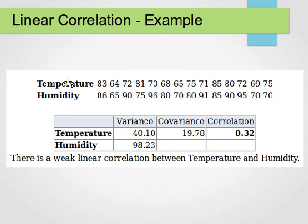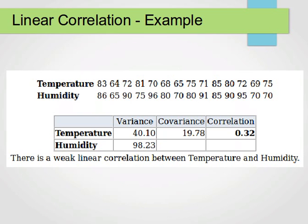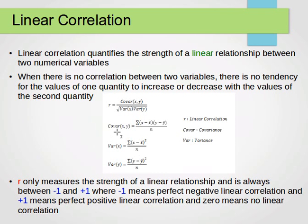Let's work through an example with data about temperature and humidity — both numerical variables. We compute the variance for temperature and the variance for humidity. As a quick reminder, variance is the summation of (x minus x-bar) squared, divided by n. We find that the variance for temperature is 40.10 and for humidity is 98.23 — you can verify this as an exercise. Then we compute the covariance using the equation: summation of (x minus x-bar)(y minus y-bar) divided by n.